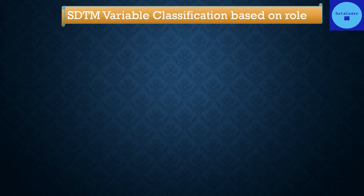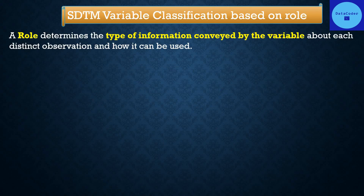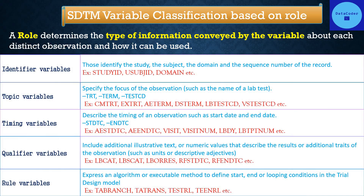A role determines the type of information conveyed by the variable about each distinct observation and how it can be used. Based on role, the variables are classified into identifier, topic, timing, qualifier, and rule.